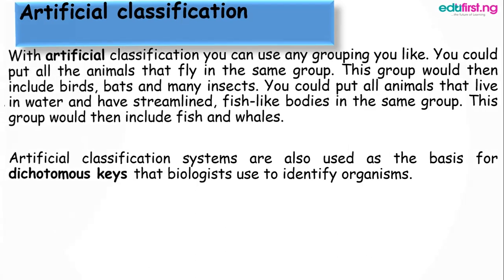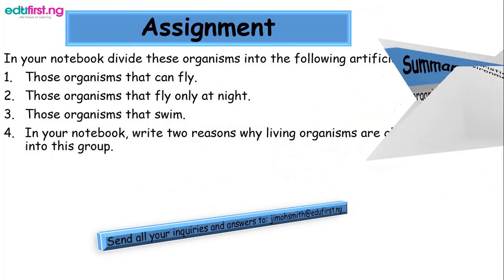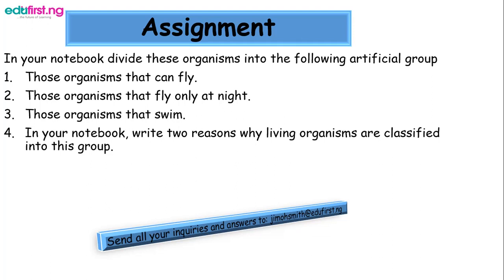In summary, plants, animals, and microorganisms together constitute the biotic components of an ecosystem. Rock, soil, air, water, light, and temperature are some of the abiotic components of our surroundings. Living things have certain common characteristics: they need food, they respire and excrete, they respond to the environment, and they show reproduction, growth, and movement. For today's assignment, in your notebook divide organisms into these artificial groups: organisms that can fly, organisms that fly only at night, and organisms that swim. Also write two reasons why living organisms are classified into groups. Thank you for listening.